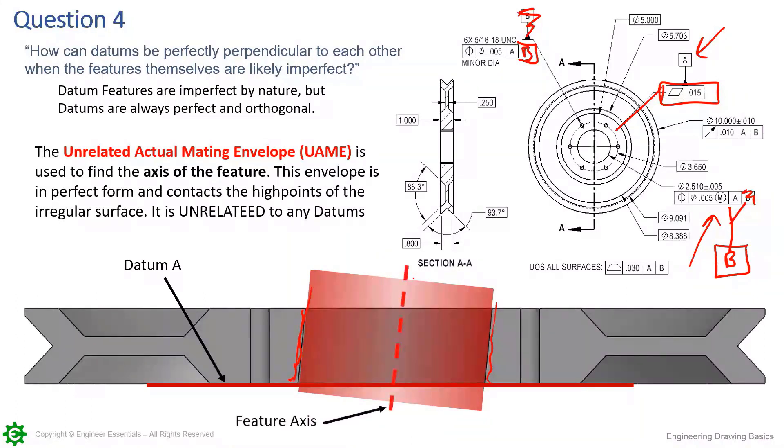It's going to expand regardless of any other orientation until it engages all those high points. Now we can use this axis, this feature axis, to control the perpendicularity. While this axis is clearly not perpendicular to this datum plane here.